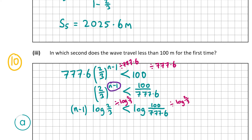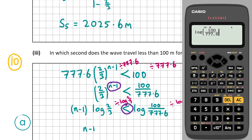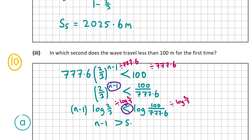Dividing both sides by log(2/3) — and because log(2/3) is negative, the inequality sign flips — we get n-1 > log(100/777.6) ÷ log(2/3), which equals 5.058492152. So n-1 > 5.058, meaning n > 6.0585. Therefore the wave will travel less than 100 meters for the first time during the seventh second.